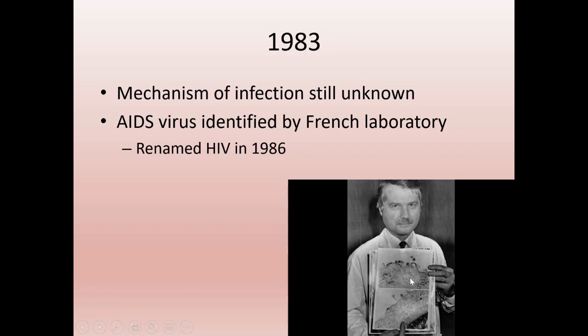These CD4 helper T cells are the alarm system that detects infection and launches your body's entire immune response. The reason HIV is so deadly is because it shuts down that alarm system. Dr. Gallo got tissue samples from the French laboratory to help confirm their findings, then ended up trying to take credit. He delayed release of the virus identification for months. He ended up getting the patent on the discovery, while the French laboratory won the Nobel Prize.